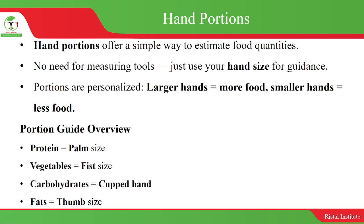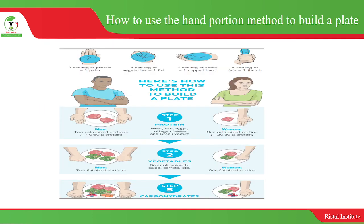The portion guide overview uses the hand for proteins, vegetables, carbohydrates, and fats. For proteins, the palm size is enough. Vegetables use the fist size, carbohydrates use the cupped hand, and fats use the thumb size. This is a pictorial representation of how much you can consume using your hand portion, and the portion sizes will differ for men and women.